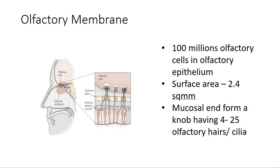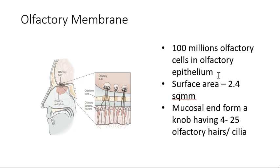To know olfaction, we should know what the olfactory membrane is. The olfactory membrane is nothing but the cribriform plate, which separates the nasal cavity from the CNS. Within the olfactory membrane, there is the cribriform plate and the olfactory bulb. Nerves pass through thin pores in the cribriform plate. There are 100 million olfactory cells present in the olfactory membrane, having a surface area of 2.4 square millimeters.